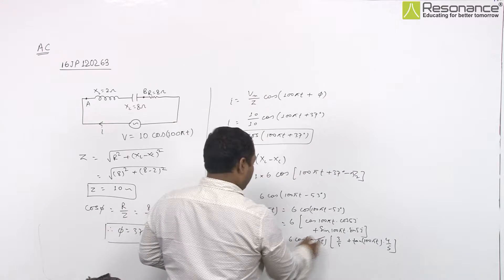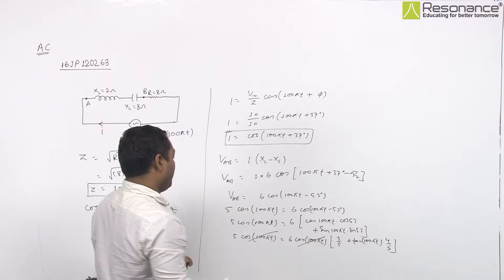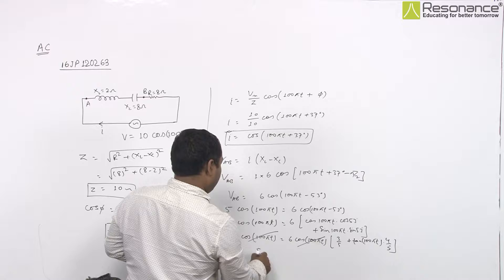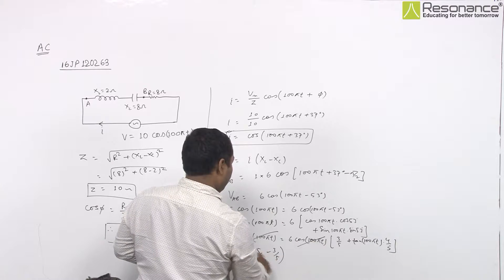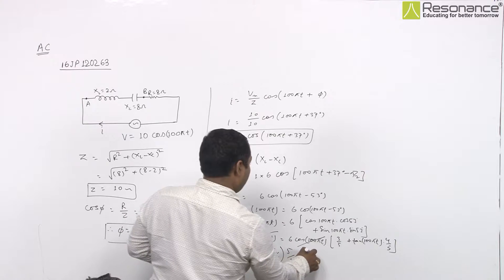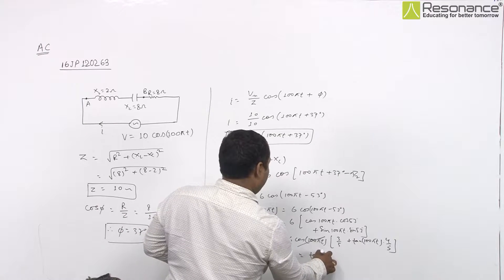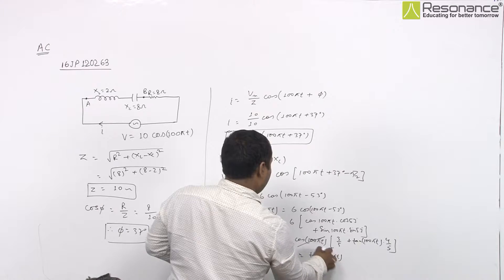You see, this value is cancelled, so 5 upon 6 minus 3 upon 5 multiplied with 5 upon 4, that will be tan 100 pi T.